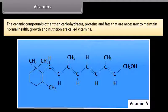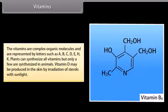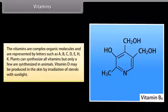The organic compounds, other than carbohydrates, proteins and fats, that are necessary to maintain normal health, growth and nutrition are called vitamins. Vitamins are a group of organic compounds required in very small amounts for healthy growth and functioning of animal organisms; their absence causes specific deficiency diseases. They are complex organic molecules represented by letters A, B, C, D, E, H and K. Plants can synthesize all vitamins, but only a few are synthesized in animals. Vitamin D may be produced in the skin by irradiation of sterols with sunlight.